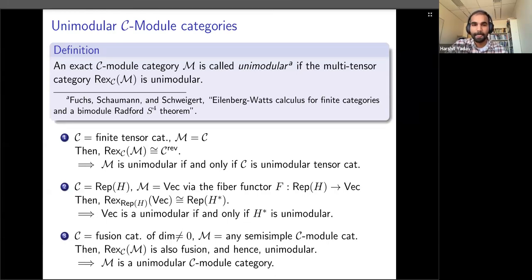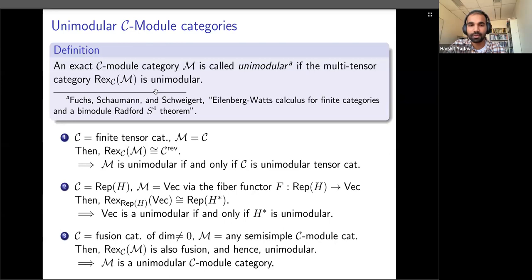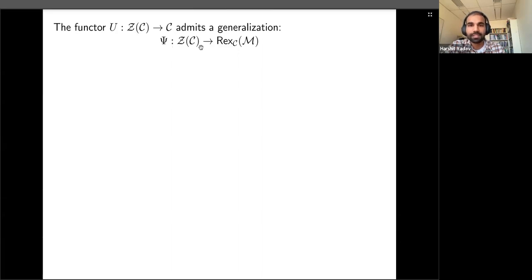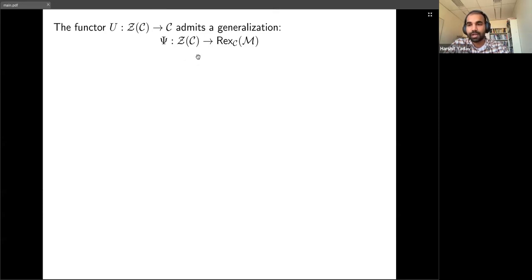As an application, we want the data to extend a CFT corresponding to a modular tensor category to a full one — that corresponds to a Frobenius algebra in the Drinfeld center. In Shimizu's result we used the functor U from the Drinfeld center to C, but it admits a generalization: a functor going from the Drinfeld center of a category to the category of endofunctors of a module category.